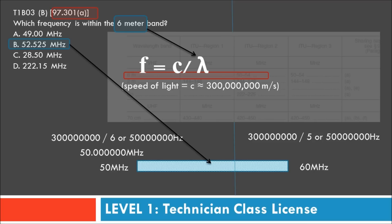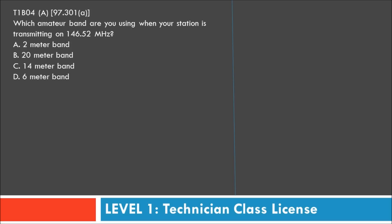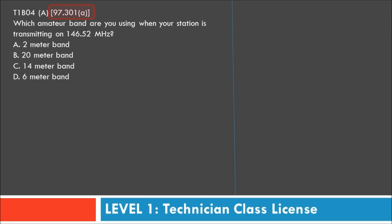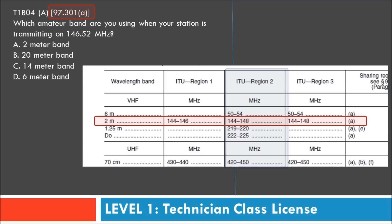Question four: which amateur band are you using when your station is transmitting on 146.52 MHz? Options are A) 2 meter, B) 20 meter, C) 14 meter, or D) 6 meter. We're again referred to the 97.301 chart. Keep in mind we are in ITU Region 2, which puts this frequency in the 2-meter band range.